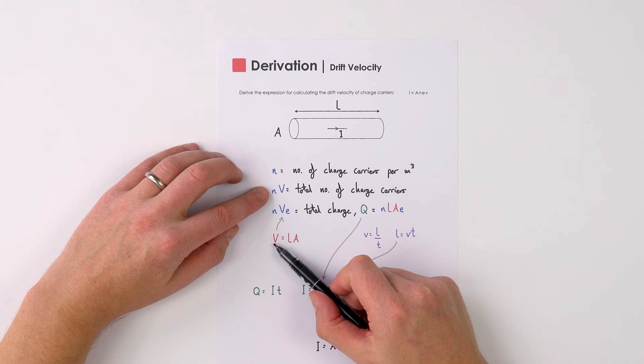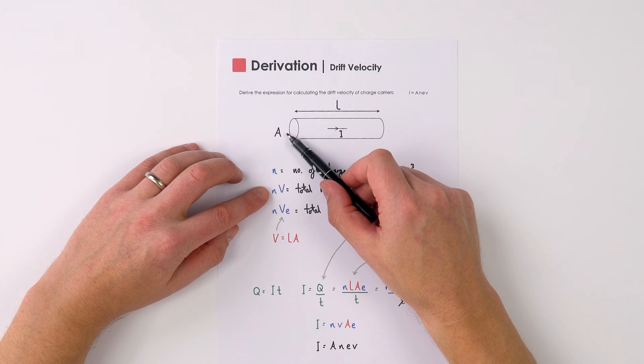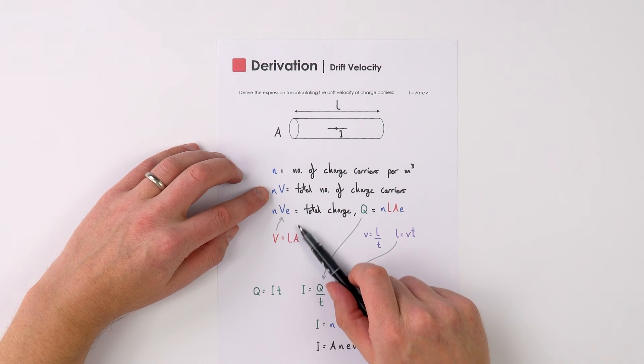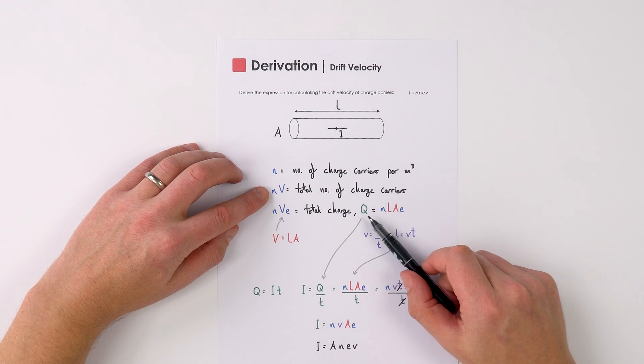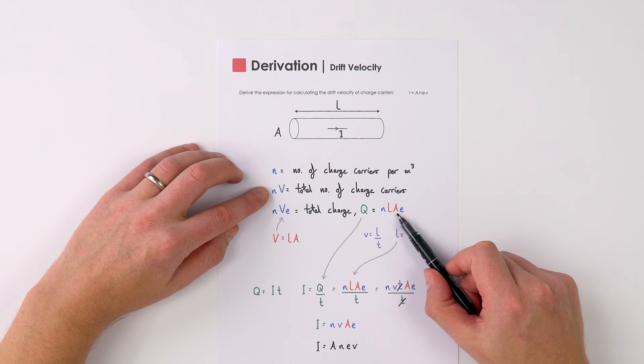Of course that volume of this bit of wire is going to be equal to the cross-sectional area times the length, and therefore the total charge, Q, is equal to N L A E.